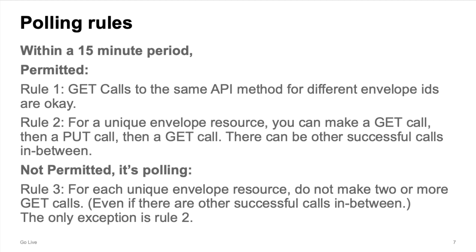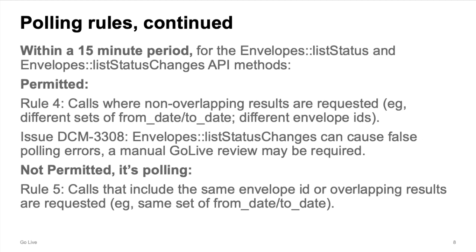Rule number two: for a unique envelope resource, you can make a GET call, then a PUT call to update the envelope, then a GET call. There can be other calls in between. Rule number three is not allowed — it's polling. You can't call the same GET API method twice or more in a 15-minute period for a specific envelope. The only exception is rule two. This rule applies to any GET call; for example, listing the documents in a specific envelope is only allowed once every 15 minutes.